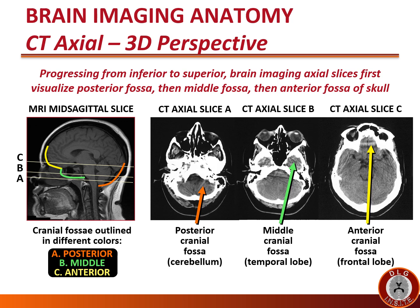The next slice up, the axial slices go through the middle cranial fossa, outlined in green and shown with the green arrow on slice B. Then higher up, the axial slice shows the anterior cranial fossa where the frontal lobe sits, outlined in yellow with a yellow arrow. So as you go from the bottom to the top on axial images, you'll see the brainstem in the posterior fossa, the temporal lobes in the middle cranial fossa, and then the frontal lobes in the anterior cranial fossa.